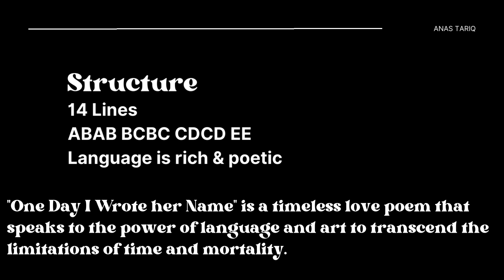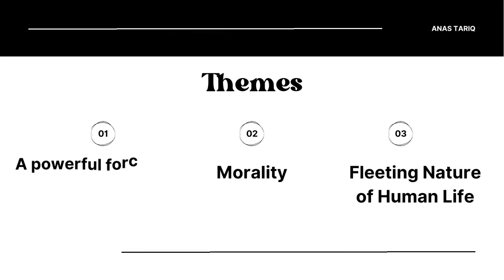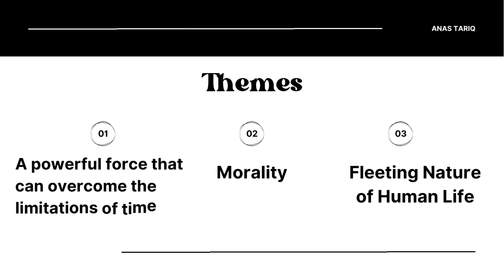'One Day I Wrote Her Name' is a timeless love poem that speaks to the power of language and art to transcend the limitations of time and mortality. The sonnet has several themes: love, mortality, the power of art and language, and the relationship between the physical and the eternal.